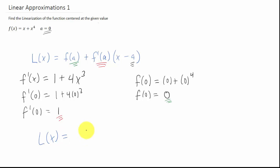So our linear approximation or linearization is just going to look like zero plus one, x minus zero, which reduces to the line just y equals x, or L of x equals x. And we are finished.